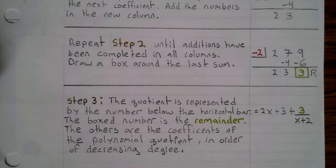Step 3. The quotient is represented by the number below the horizontal bar. The box number is the remainder. The others are the coefficients of the polynomial quotient in order of decreasing degree.